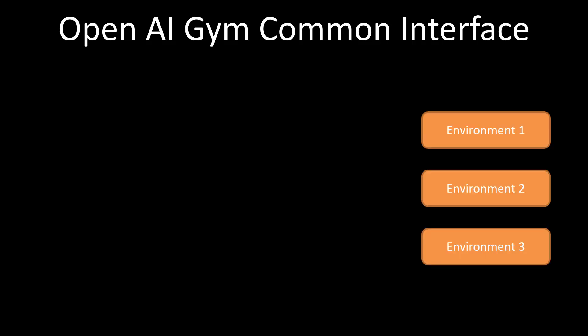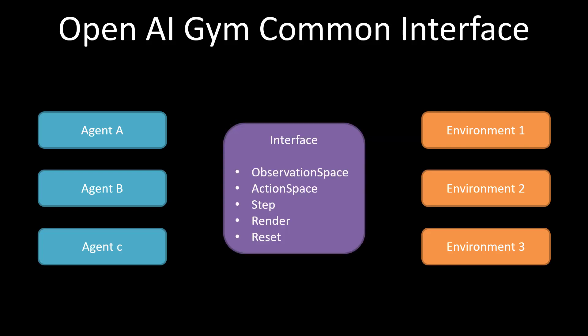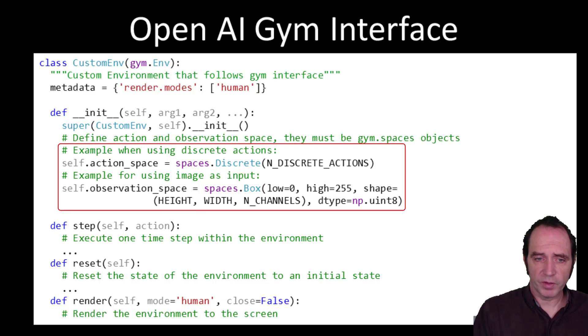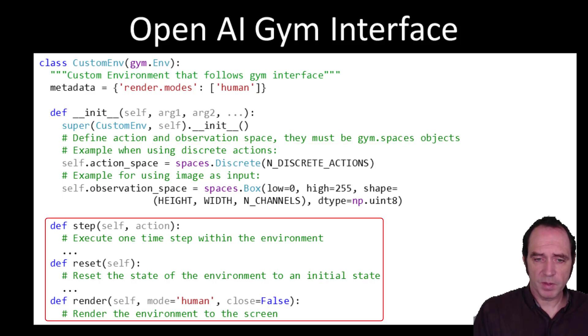OpenAI Gym provides a common interface between agents and environments, allowing us to have a number of different environments and agents and rely on each agent being able to communicate with each environment. The interface provides an observation space that allows the agent to read the state of the environment, an action space to send actions, a reset method to reset to the starting position, and optional render functionality that can provide an image depicting the environment for generating animations. If we want to provide our own simulation, we provide it as a custom environment — a Python class which derives from the gym environment class — defining an action space, observation space, and methods for step, reset, and render.